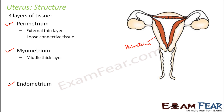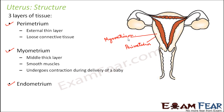The myometrium is the middle layer and is quite thick. It is made up of smooth muscles and undergoes contraction during delivery of a baby. When the baby is fully grown and needs to come out, these uterine walls contract and push the baby downward — this contraction is performed by the myometrium.